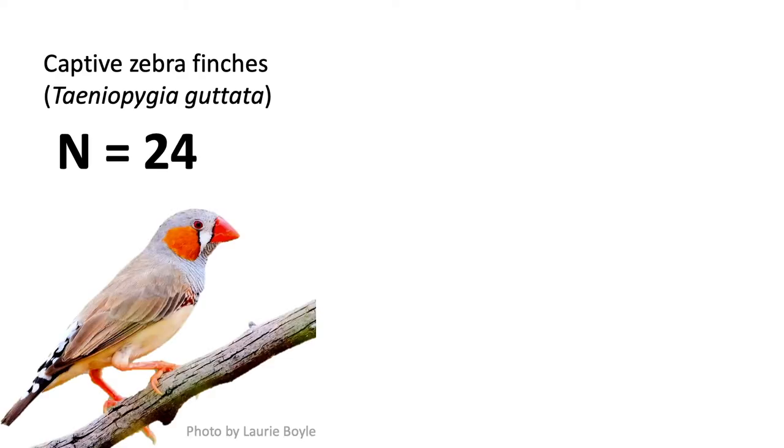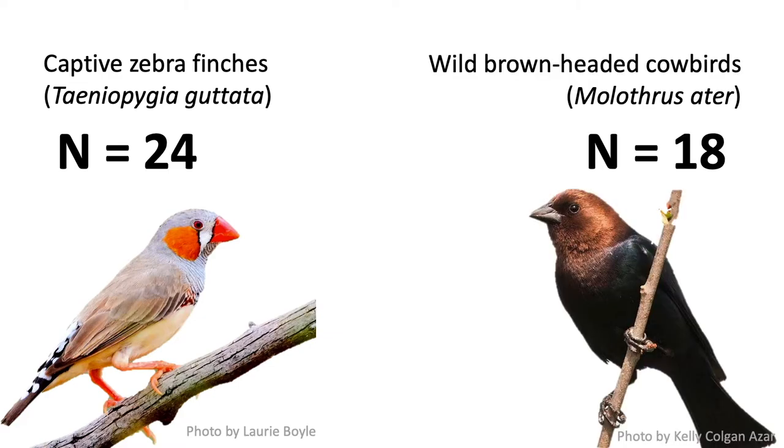Our study organisms consisted of 24 lab-raised zebra finches and 18 wild-caught brown-headed cowbirds, both of which are able to see into the UV spectrum, making them good representatives for many other songbirds.